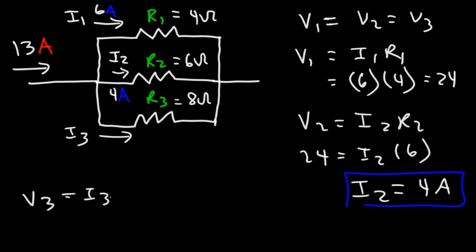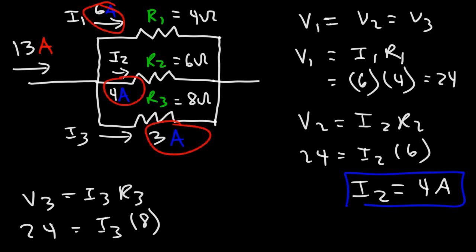So now we can easily calculate I3 using this. V3 is equal to I3 times R3. V3 is still 24, R3 is 8. 24 divided by 8 gives us a current of 3 amps. And just to check the work, you can see that these three currents add up to the total current. 6 plus 4 plus 3 gives us a total of 13. Now we could have also found this answer by taking 13 and subtracting I1 and I2. That would have given us 3 as well.